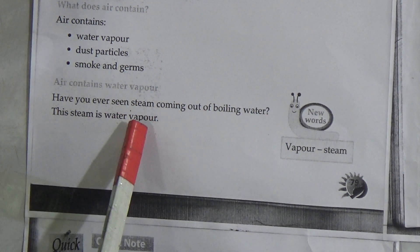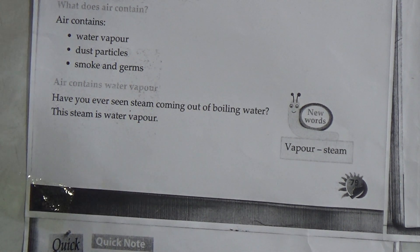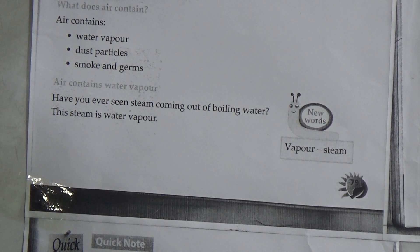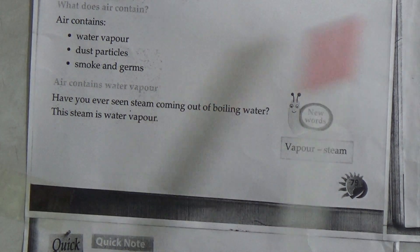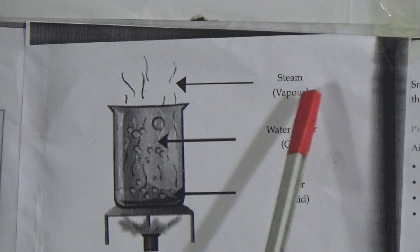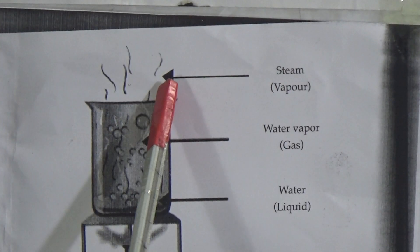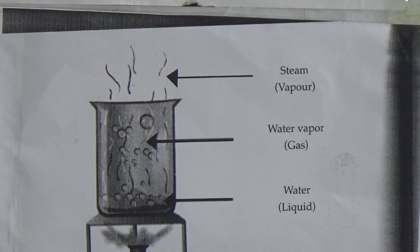Air contains water vapour. Have you ever seen steam coming out of boiling water? This steam is water vapour. When we pour water into a pot and heat the pot on the stove, after a few minutes the water is boiling and steam is coming from the water. This steam is water vapour. In the picture you can see a pot on the stove with water boiling and steam coming out. Water vapour is very important for rain — without water vapour we cannot have rain.